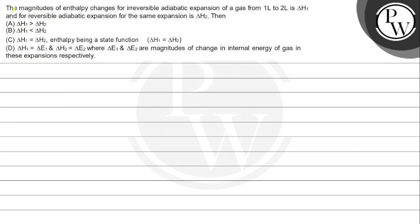Let's see this question. The magnitude of enthalpy changes for irreversible adiabatic expansion of gas from 1 liter to 2 liters is delta H1, and for the reversible adiabatic expansion for the same expansion is delta H2. Then: delta H1 is greater than delta H2, delta H1 is less than delta H2, or the third option is delta H1 is equal to delta H2.